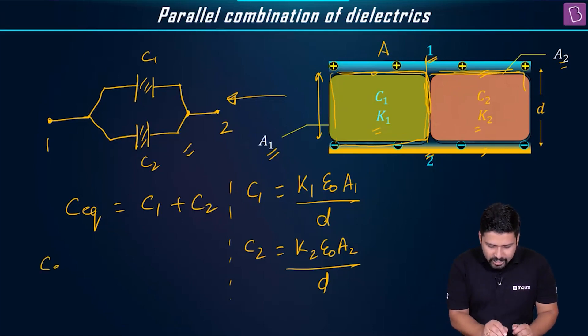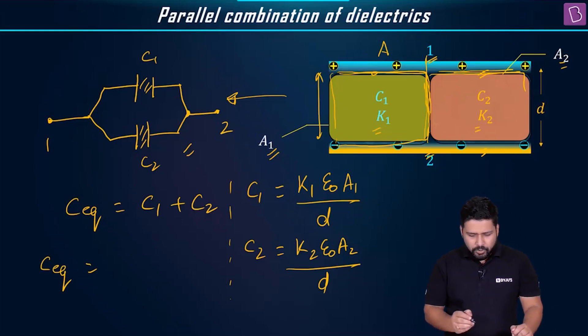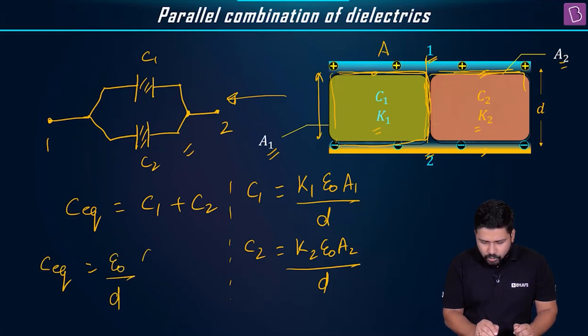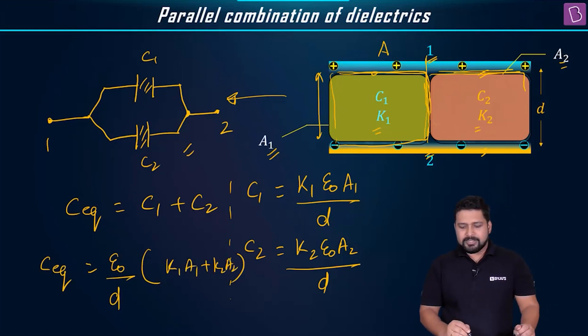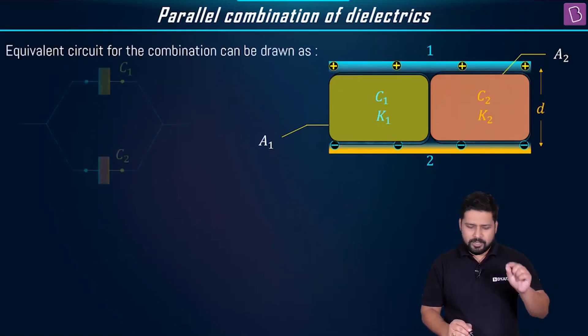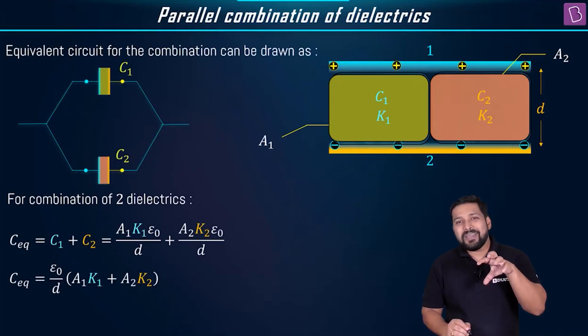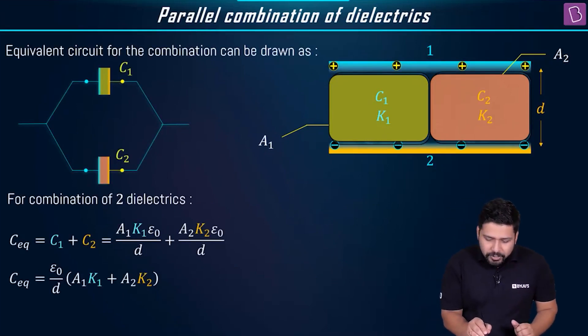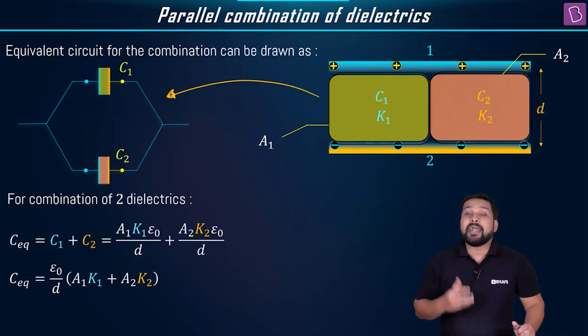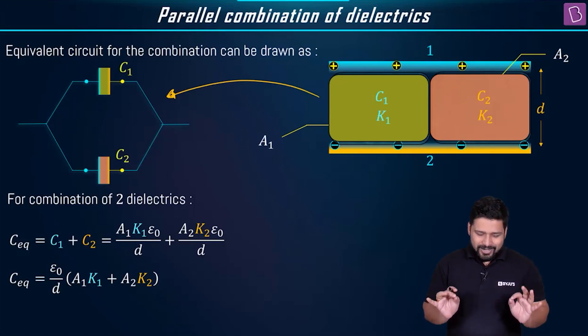What do you get now for C equivalent? If I place the value of all this, you know that epsilon 0 by D will be common. So you will be left with K1 A1 plus K2 A2. That's it. This is the simple formula of C equivalent. You can directly find out this formula. You can star mark this formula. But the main and important thing is to redraw this circuit in this format and identify that is it a series combination or is it a parallel combination.